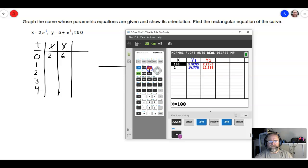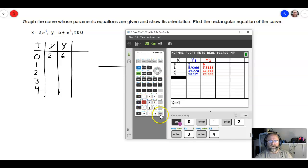So two equations, and now I'm going to go to table set to make sure that my independent is on ask and my dependent is on auto. I want it to ask me my values for my independent variable. That's my t here, and I want it to automatically give me my dependent variables, which would be my x and my y. Now I go over to second graph, which is my table. Let's delete these values out of the way. And then what we're going to do is we're just going to put in zero, one, two, three, and four.